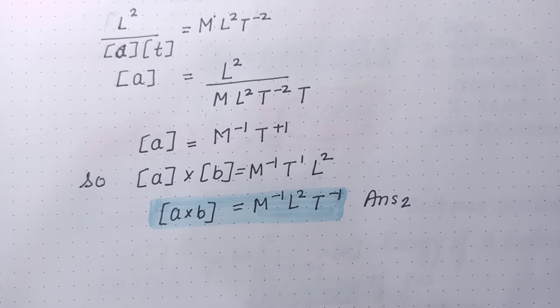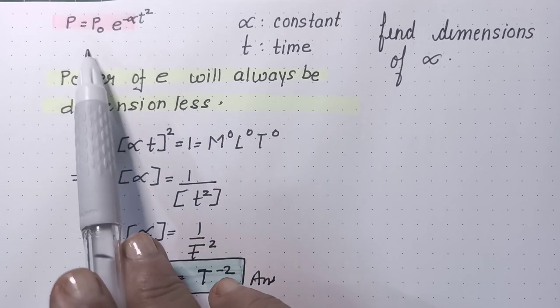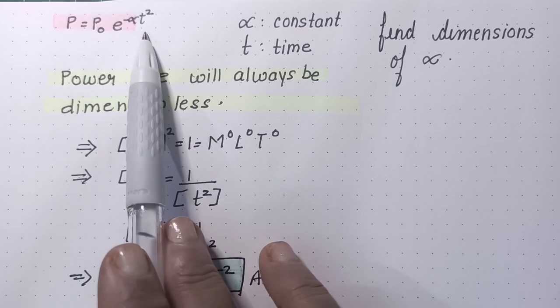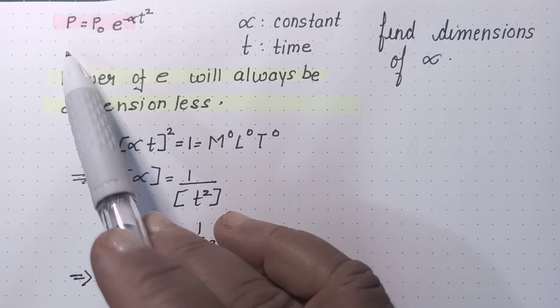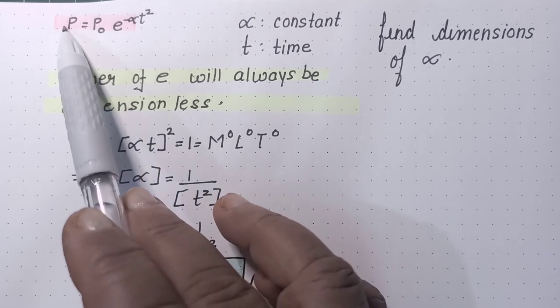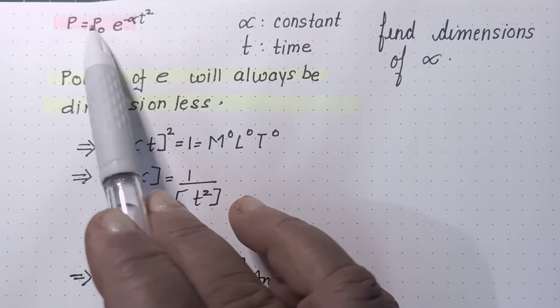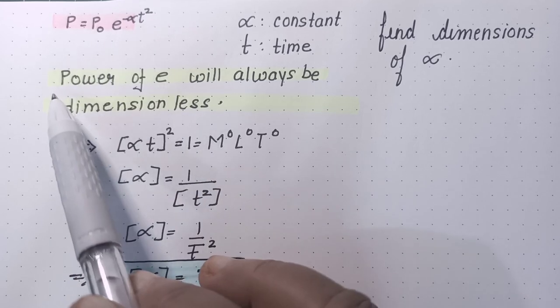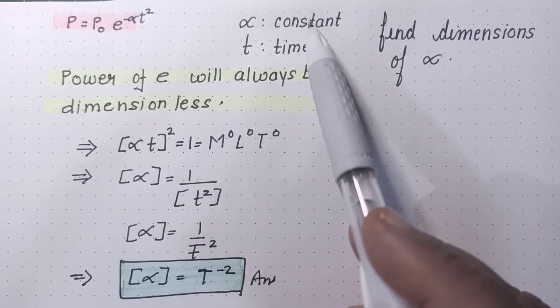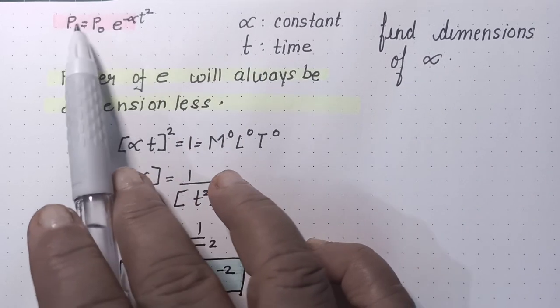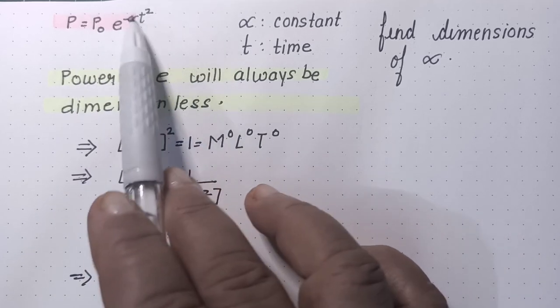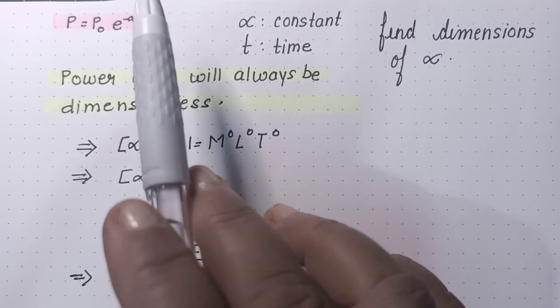Practice karoge to dhire dhire this will become clear. Now since these questions confuse students, I've taken one exponential question. Here P and P₀ are some quantities, not told which quantity, but P is expressed with time through this relation. Question is asking alpha is constant and T is time, so find alpha ka dimension.